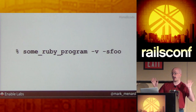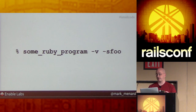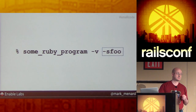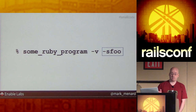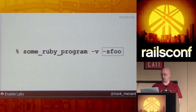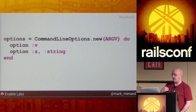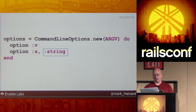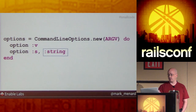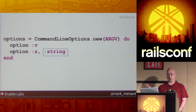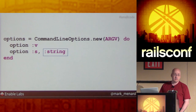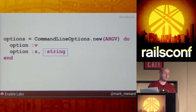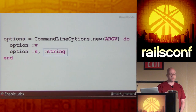My workmate comes along and says he really likes the library, but could we handle string options? Sounds pretty simple. So I come up with a small extension to the DSL — just pass the second argument to 'option' with a simple representation of the option type, 'string' in this case. I also default to Boolean so I don't have to change the code that other people have written.